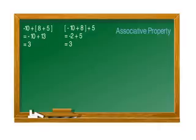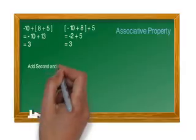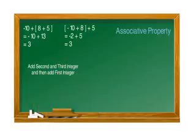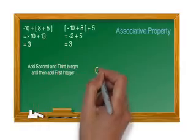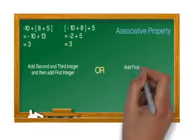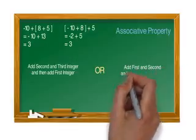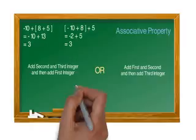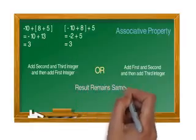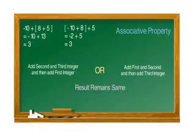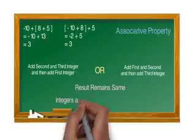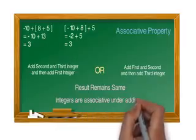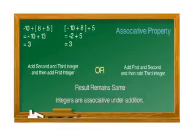So when you are adding three integers, if you add the second and third integer and then add the first, or you may add the first and second integer and then add the third, the result will remain the same. This is called associative property. So you can say integers are associative under addition.